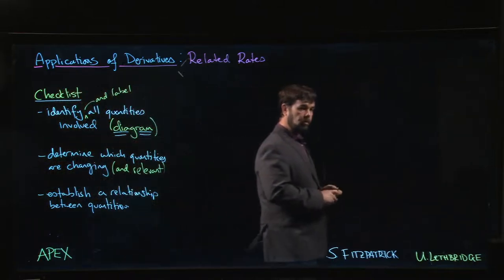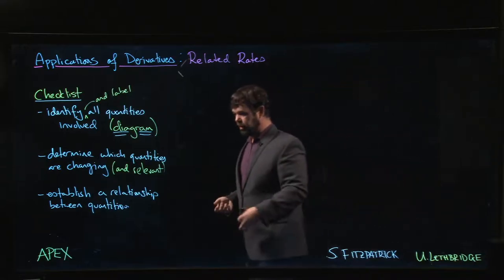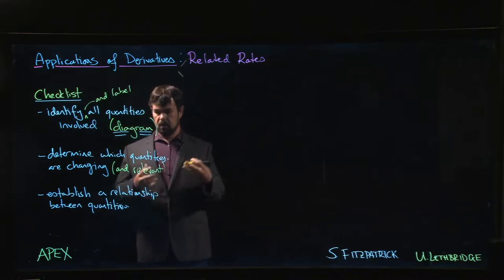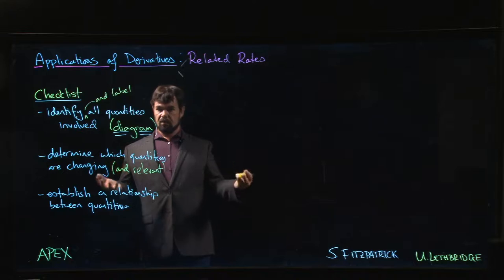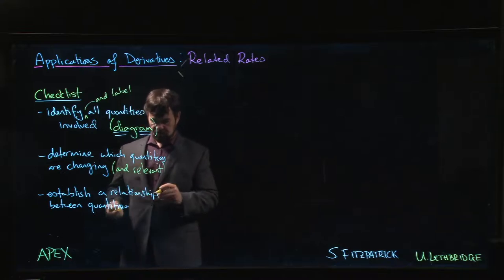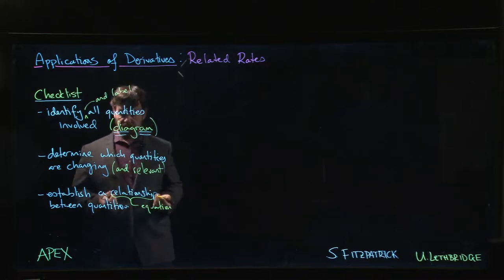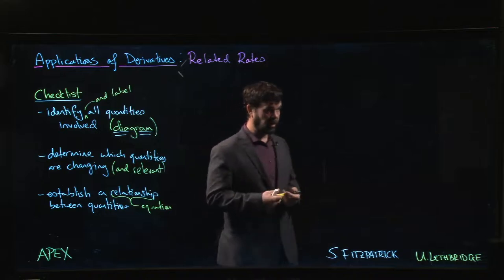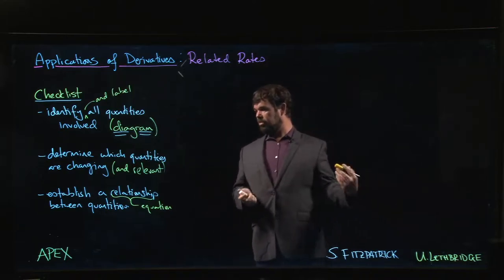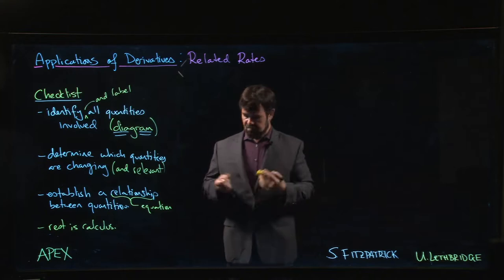Sometimes this relationship comes from geometry - it might come from something like the formula for the area of a circle, or the Pythagorean theorem, or similar triangles. Other times it might be coming from physics or chemistry. But there's generally some sort of equation - by relationship, we really mean an equation. We've got to figure out that equation. That's often the hard part - setting up that equation. Once you've got that equation set up, the rest is going to be calculus, or maybe a little bit of algebra.